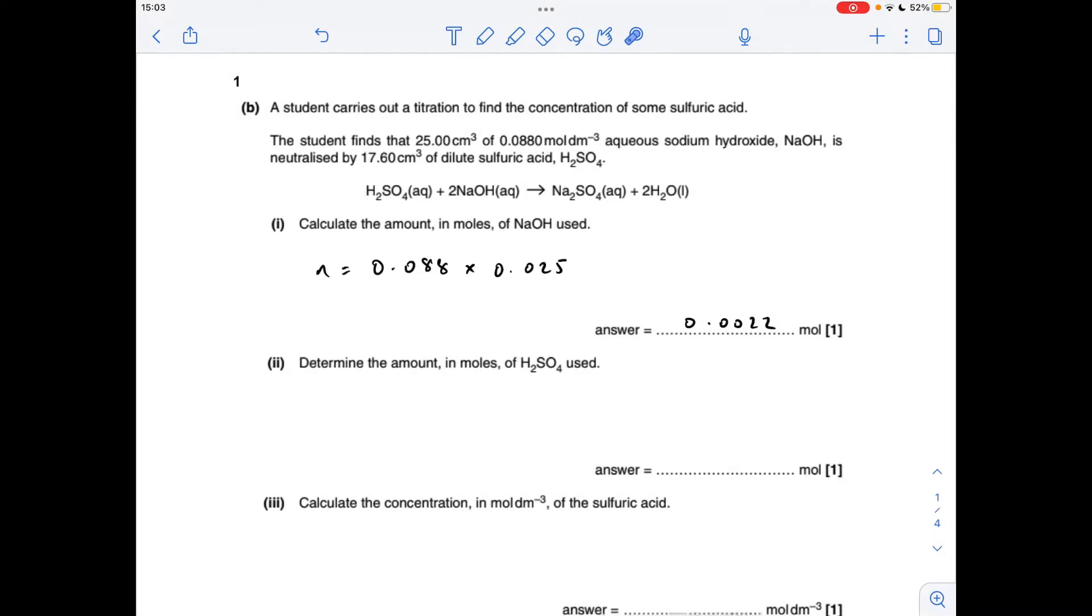Okay, so the moles of sodium hydroxide used is concentration times volume in decimeters cubed, so 0.0022. Then using the mole ratio, I get the moles of sulfuric acid, which is going to be half as many: 0.0011. Then to get the concentration of the sulfuric acid, it's the moles over the volume in decimeters cubed again: 0.0625 moles per decimeters cubed.